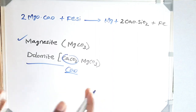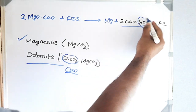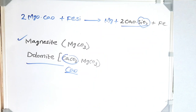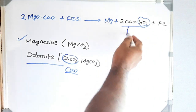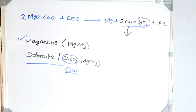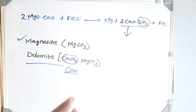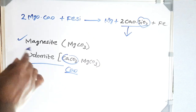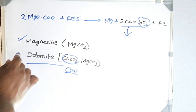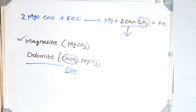The advantage of using dolomite over magnesite is the presence of CaO, which acts as a built-in flux. This CaO neutralizes the SiO₂ by forming 2CaO·SiO₂, reducing the activity of products. So in one way we are removing magnesium vapor, and in another way the activity of SiO₂ is being controlled by CaO — that is the main reason for choosing dolomite.